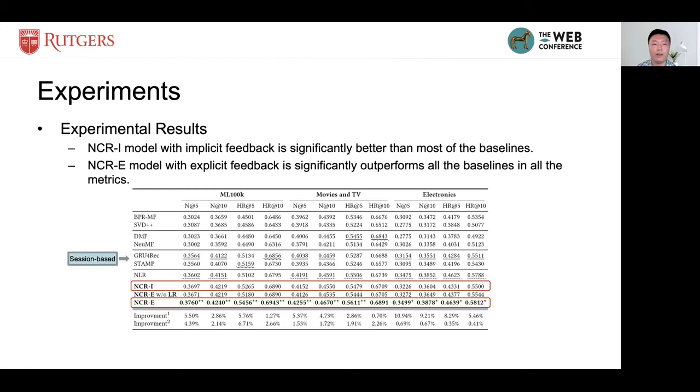The results show that NCRI is better than the two baselines in most cases. Notice that our model shuffles the input variables in every epoch, which means that we actually did not use the item ordering information. However, our neural collaborative reasoning approach can still outperform the two session-based models on most of the metrics.